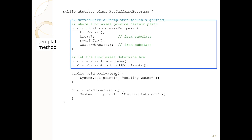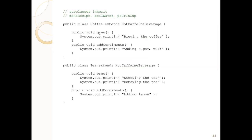We're indicating to readers and clients of this class that we want them to implement brew and condiments because we have marked them abstract. So they cannot build a class that inherits hot caffeine beverage that isn't abstract without implementing brew or add condiments. Our code actually gets simplified — our coffee code changes into brewing the coffee for brew, and add condiments turns into adding milk and sugar. For tea, brew includes steeping and removing the tea, and condiments include adding lemon.